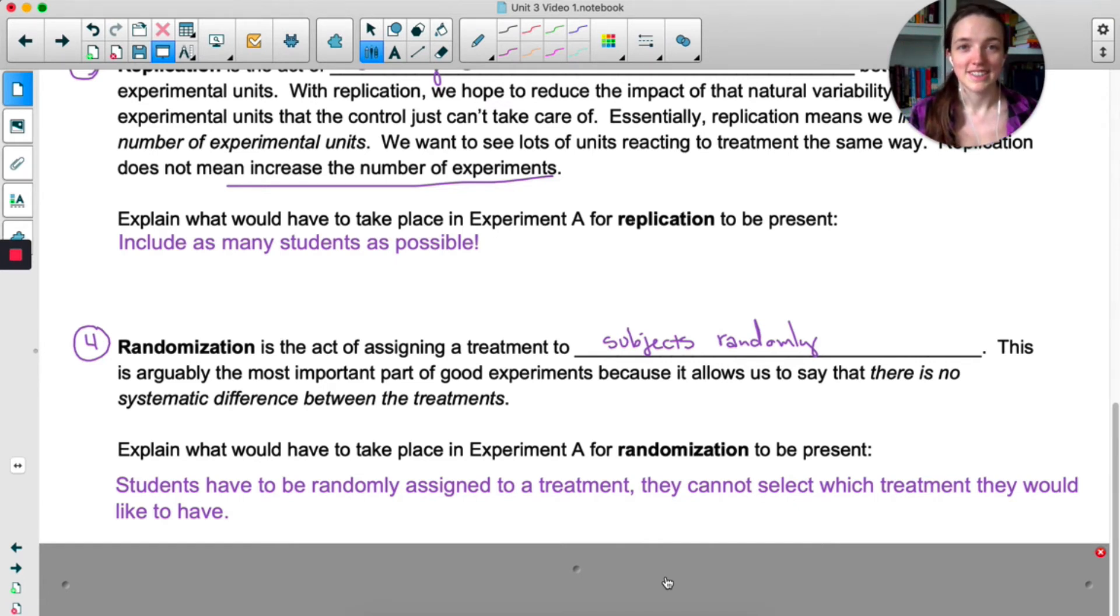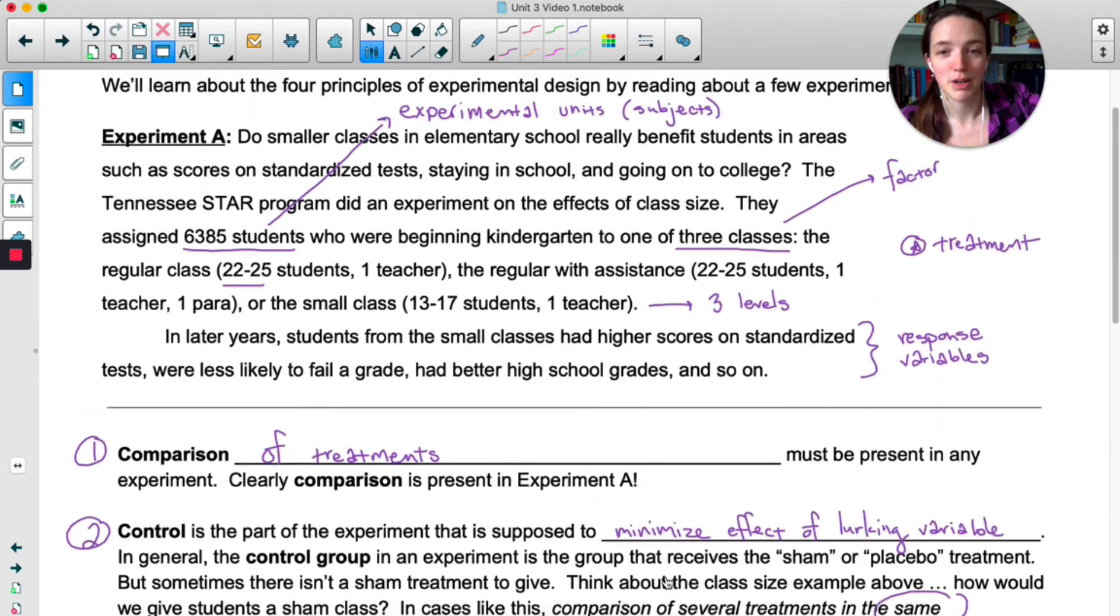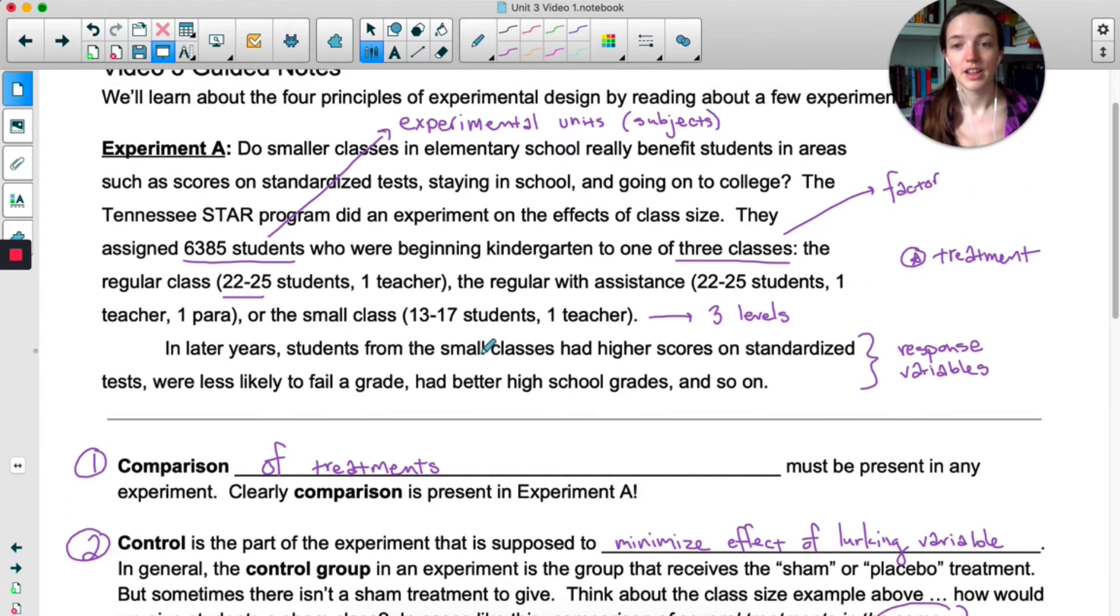With this experiment I think it's pretty easy to see why we would have a problem if students or parents could select which treatment they wanted. The most vocal parents are going to get their students in the perceived best class which I would say is probably the one that has the smallest class size. The really vocal parents are going to ask that their students be put in the small class and so what you're going to end up with is only students in the small class who have parents who are very active in their child's education. So at the end of the study we can't tell if the students in the small class did better because they were in a small class or because their parents were super involved in their education.